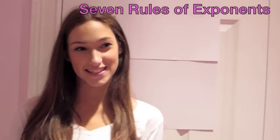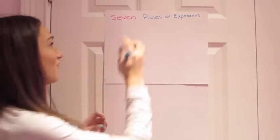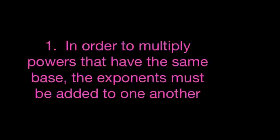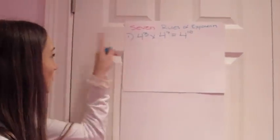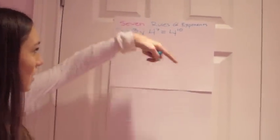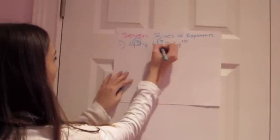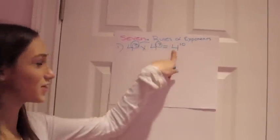I will be teaching the seven rules of exponents. The first rule states that in order to multiply powers that have the same base, the exponents must be added to one another. For example, if you have 4 to the third times 4 to the seventh, you would add 3 and 7 together, and the answer would be 4 to the tenth.